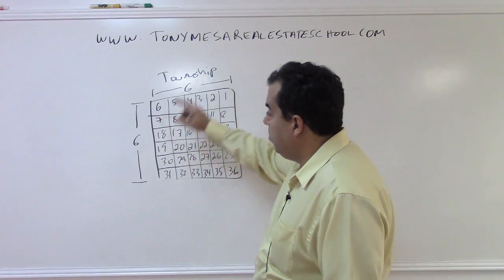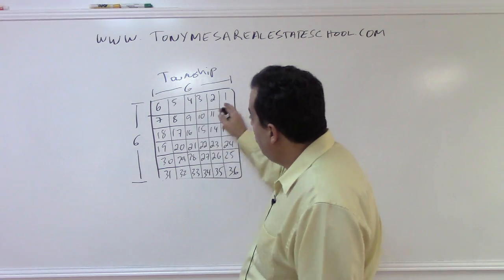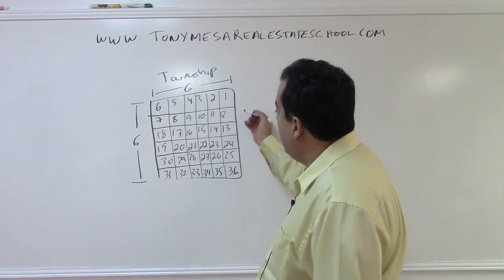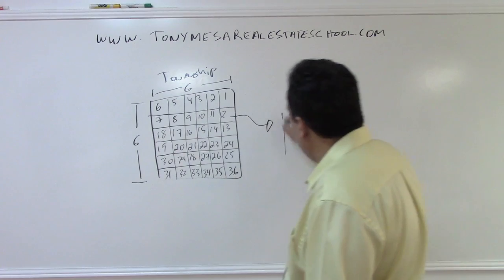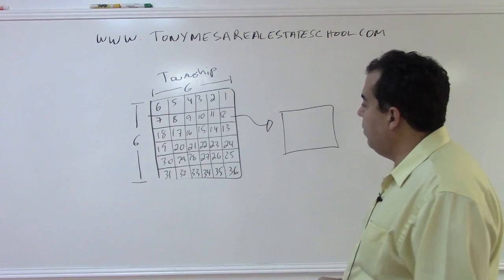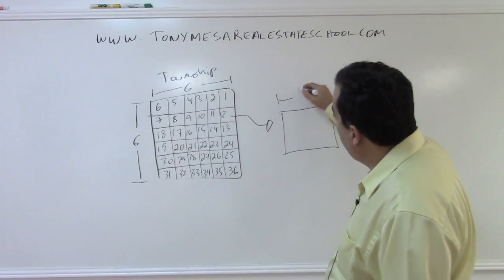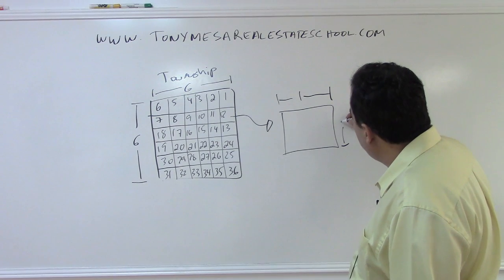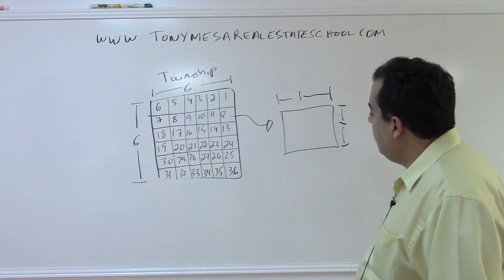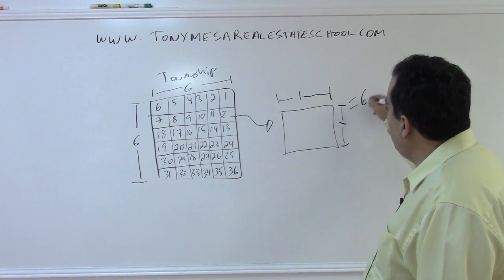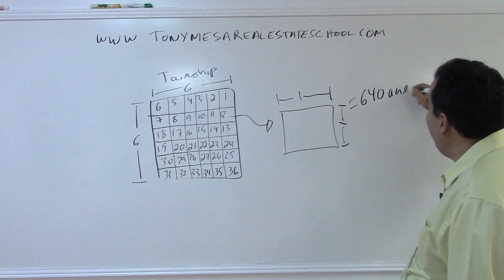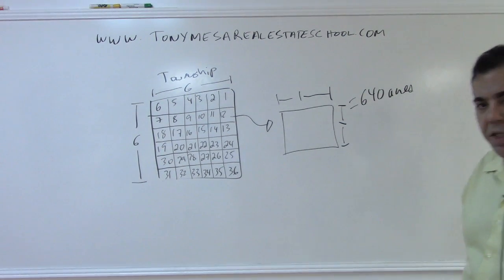Now, a township, we said, is six miles by six miles. Each one of these sections, I'm just going to take section number 12, and I'm going to draw it bigger here. Each one of these sections is one mile by one mile. And something that is one mile by one mile is equal to 640 acres. That's a number you need to know for the state exam.